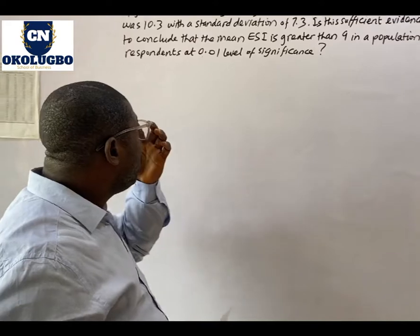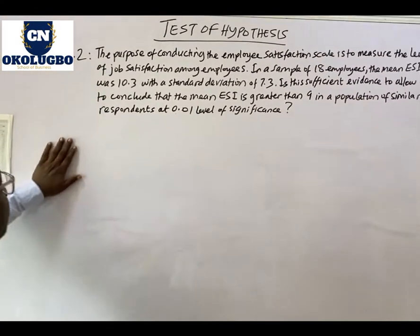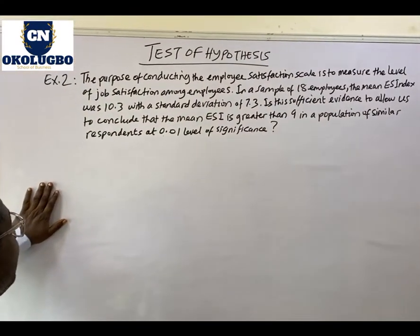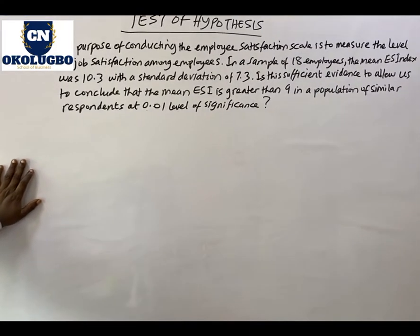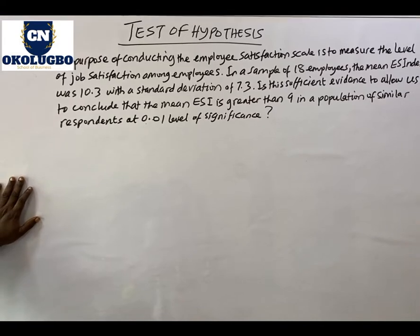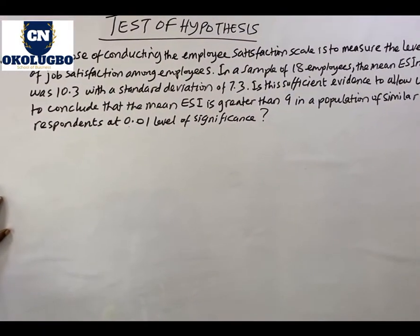Thank you for joining me once again on this channel. We're going to look at another example of test of hypothesis — another example of a one-tail test and how we solve such problems. Come along with me. We have Example Two: the purpose of conducting the employee satisfaction scale is to measure the level of job satisfaction among the employees.